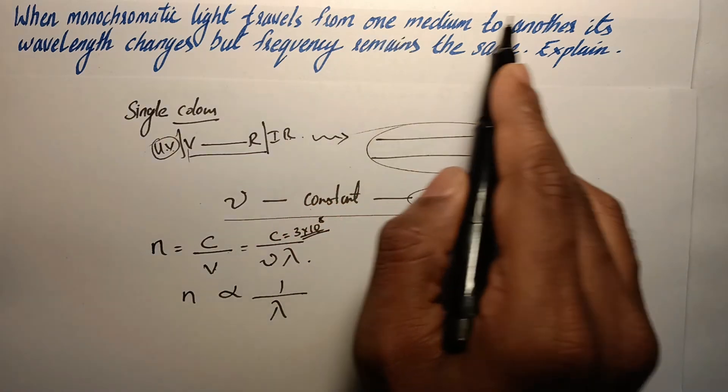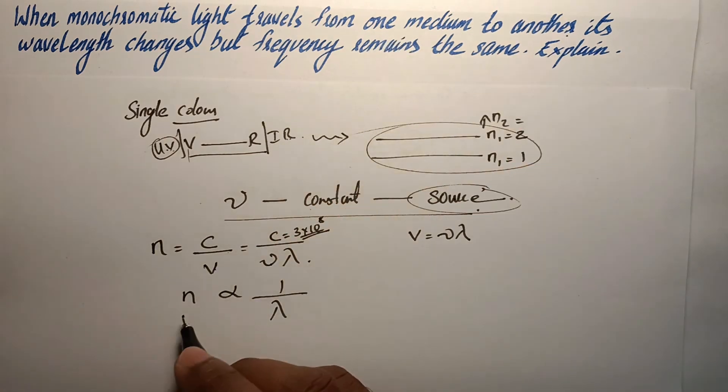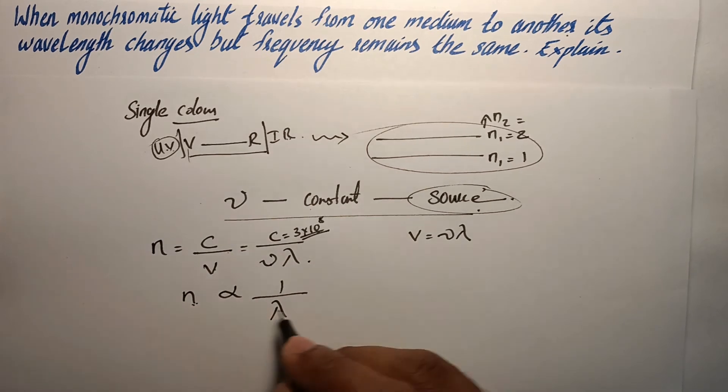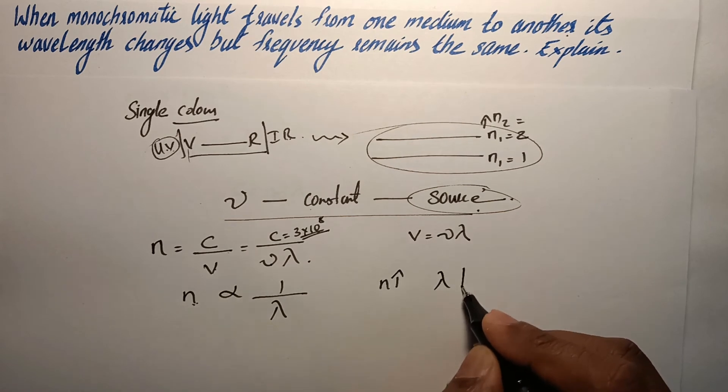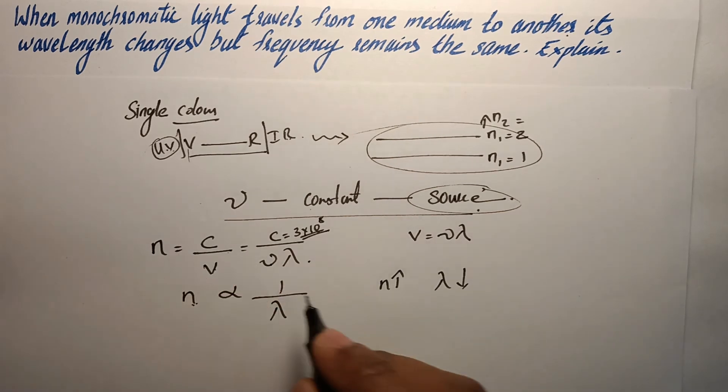So when medium changes from one to another, the refractive index also changes. And with refractive index, wavelength changes. So refractive index increases, wavelength decreases, or vice versa.